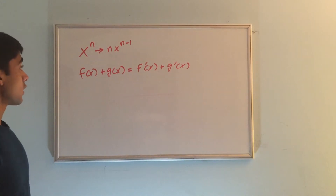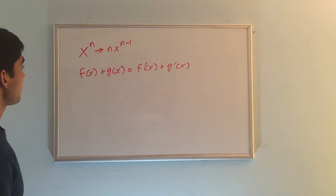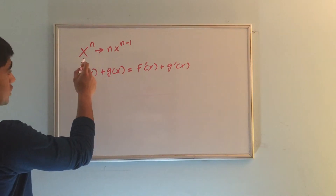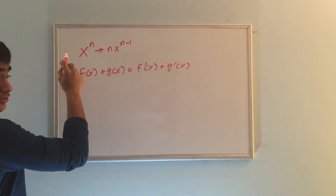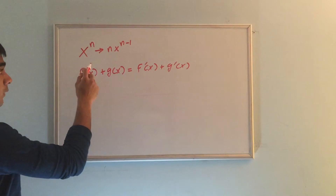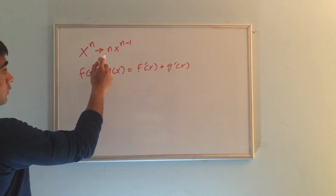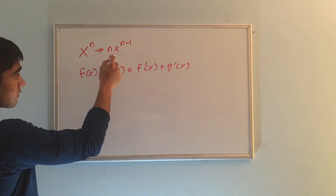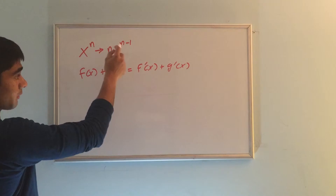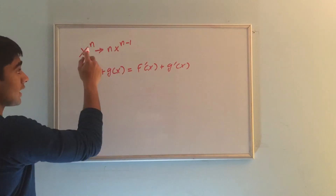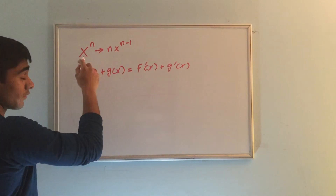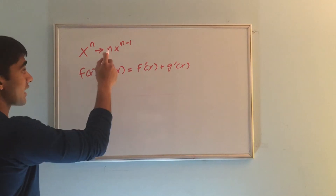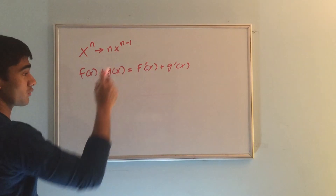So just to recap, the derivative of a function where there's a variable base raised to a constant power equals the constant multiplied by the variable base raised to the constant minus 1. That is, the derivative of x to the n equals n times x to the n minus 1.